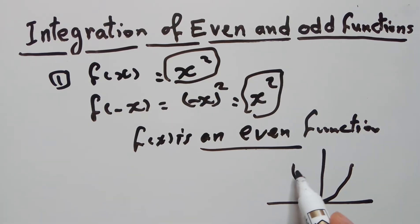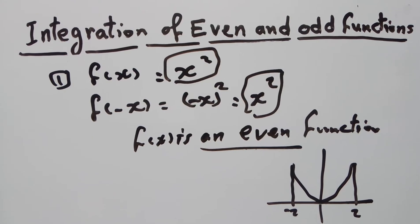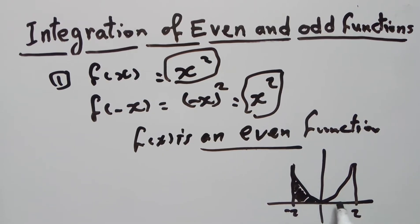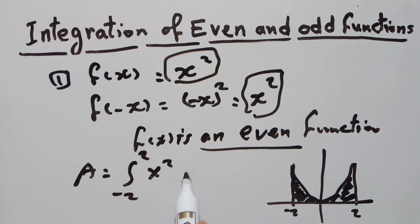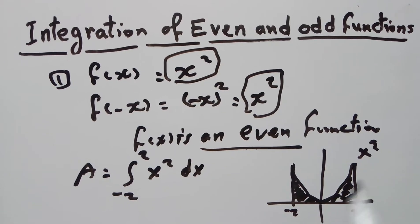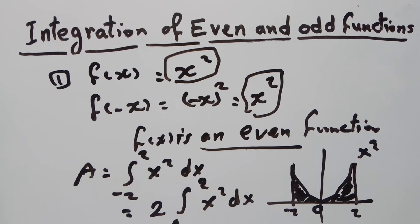If you draw this function you get a parabola. If you want to evaluate the area from -2 to 2, this enclosed interval gives you the area under the curve and above the x-axis between the two vertical lines x = -2 and x = 2. The definite integral from -2 to 2 of x² dx equals double the integral from 0 to 2 of x² dx.